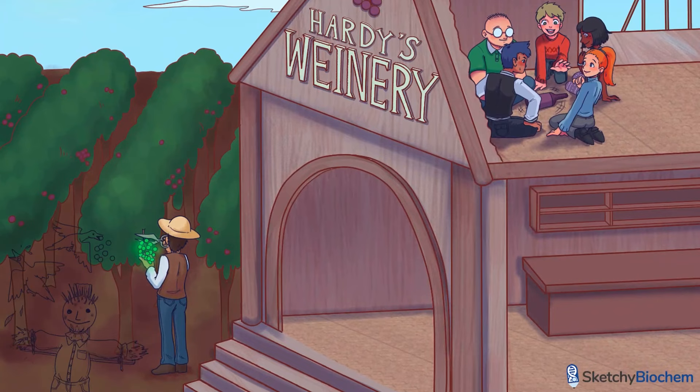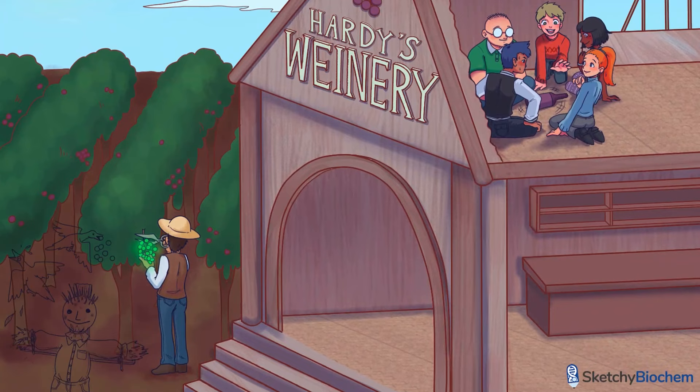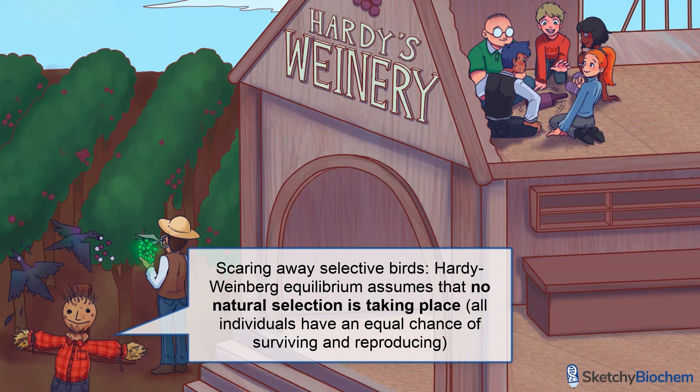Hardy-Weinberg also assumes that no natural selection is taking place. This means that all individuals have an equal chance of surviving and reproducing. You leave those highly visible white grapes alone, birds. The scarecrow here is doing an excellent job of ensuring that all grapes have an equal chance of surviving.